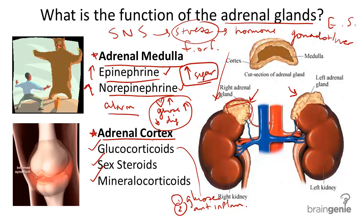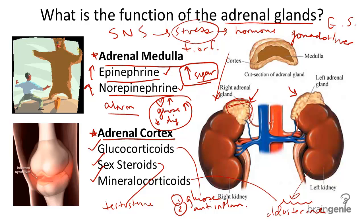Sex steroids produced by the adrenal cortex, such as testosterone, matter little because there is an abundance of these hormones produced by the gonads themselves. And mineralocorticoids help the kidneys to reduce water loss. A major mineralocorticoid is called aldosterone, which causes the kidneys to retain sodium and return it to the body. When sodium is removed from the urine and returned to the body by the process of osmosis, water will follow along with it.